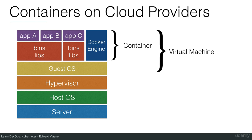On cloud providers like DigitalOcean and Amazon you have the physical server and host OS managed by the cloud provider, then a hypervisor managing guest operating systems. You only have access to the guest OS, like Ubuntu. In our case we started an Ubuntu droplet on DigitalOcean, installed the Docker engine on it, and then installed our app — in this case Jenkins. Docker is an abstraction on top of that, not something that changes how the whole OS runs in the cloud.